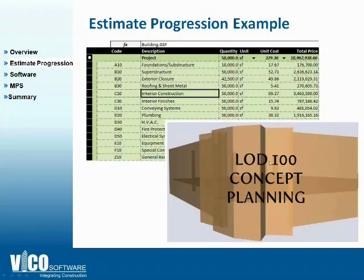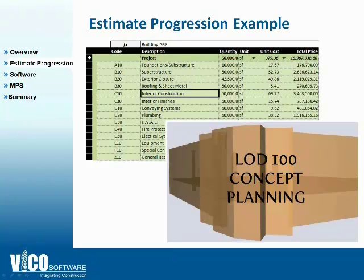If we have a basic concept planning model with area types — corridors, program areas, offices, office space, the different parts of the building — we can allocate different costs to them on a square foot basis. We typically do that by system: superstructure, exterior enclosure, etc. We can just input a rate per square foot, same as you would do in Excel with very limited information.